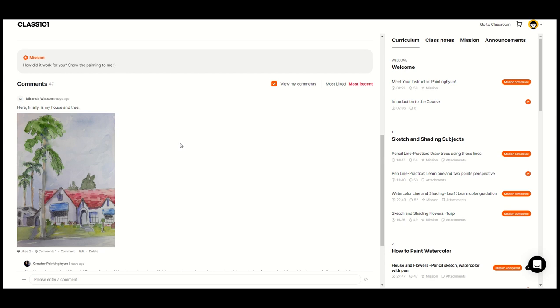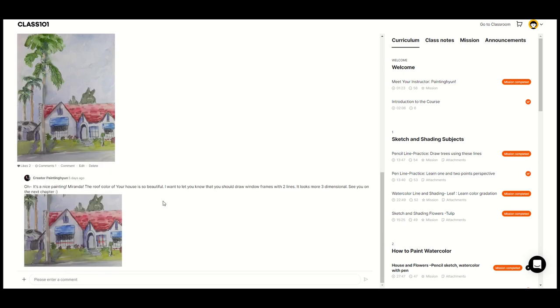I uploaded a picture of it and said here is my house and tree after being enrolled for two years. Anyway maybe one year. I don't remember. Anyway what she said is it's a nice painting Miranda. The roof color of your house is so beautiful. She wants to let me know that I should draw window frames with two lines because it looks more three-dimensional. What is my take on that? My take is I absolutely agree with her and that is a good reminder to draw window frames with two lines. Definitely. Cool.